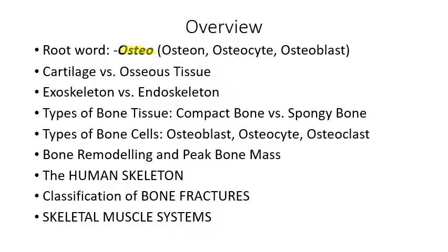The word 'osteo' refers to bone. You need to know what these suffixes for different organ systems mean: 'osteo' refers to bone, 'hepato' refers to the liver, and 'renal' refers to the kidneys.